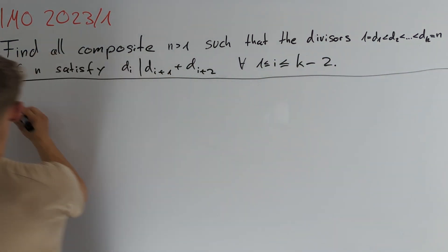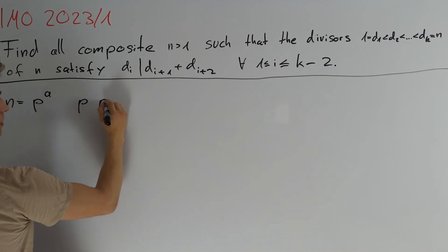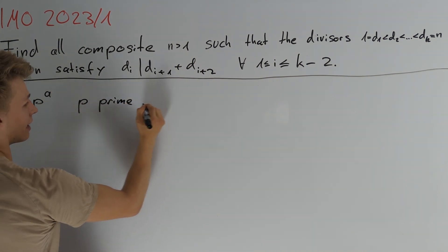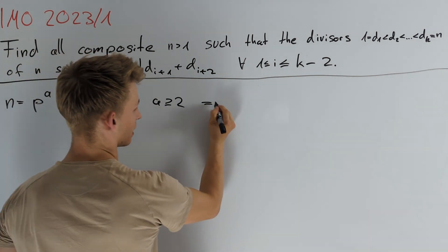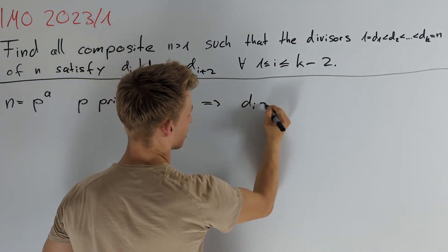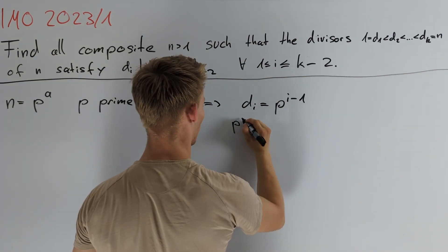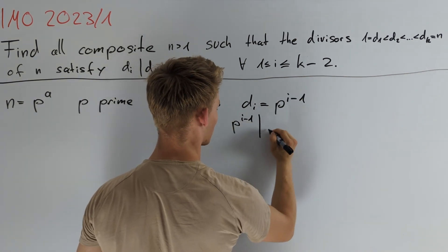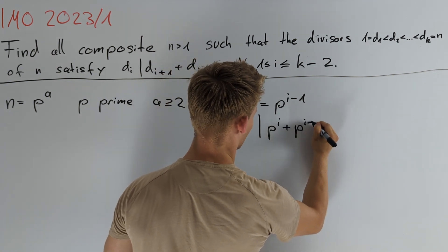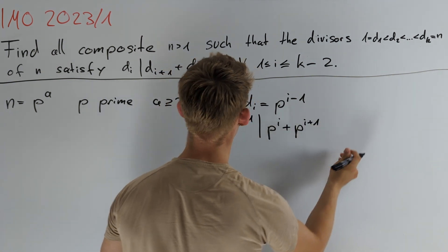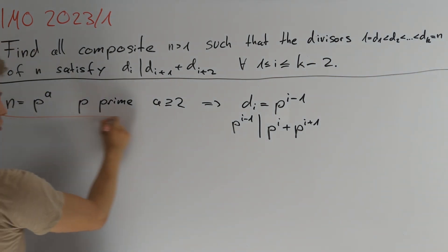We see that if n equals p to the power of a, where p is a prime number and a is an integer greater than or equal to 2, we get that di equals p to the power of i minus 1. Since p^(i-1) clearly divides p^i + p^(i+1), the condition is satisfied and therefore these n's are all solutions.